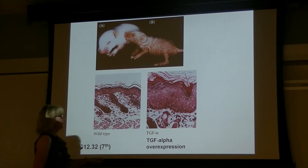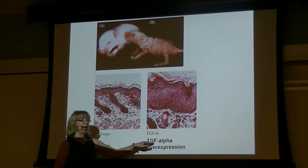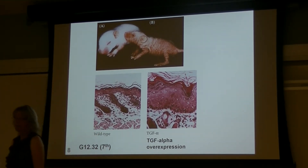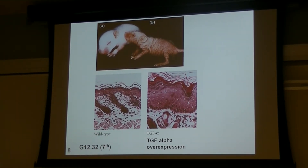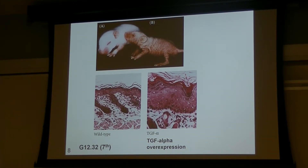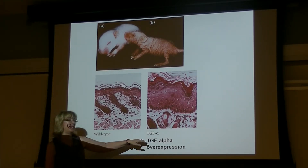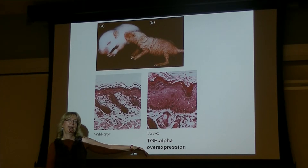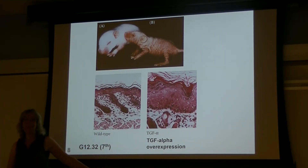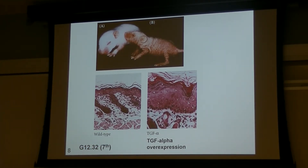One other thing to point out: transforming growth factor alpha is in a different gene family than TGF-beta. TGF-beta is a whole superfamily of genes including the BMPs, activin, and a whole bunch of others. Even though TGF-alpha has a similar sounding name, it's actually a distinct gene family — a superfamily unto itself — separate from TGF-beta.